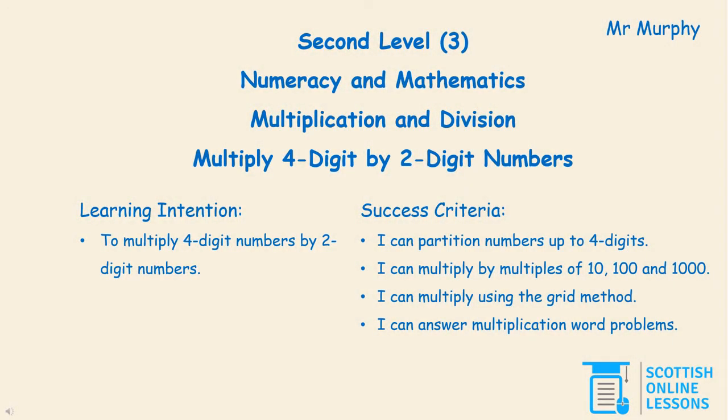Hello, it's Mr Murphy here from Scottish Online Lessons, and this Maths lesson today is about multiplication and division. It's going to look at multiplying four-digit by two-digit numbers. The learning intention is to multiply four-digit numbers by two-digit numbers. And the success criteria — these are the steps we're going to need to follow — are: I can partition numbers up to four digits, I can multiply by multiples of 10, 100 and 1000, I can multiply using the grid method, and I can answer multiplication word problems.